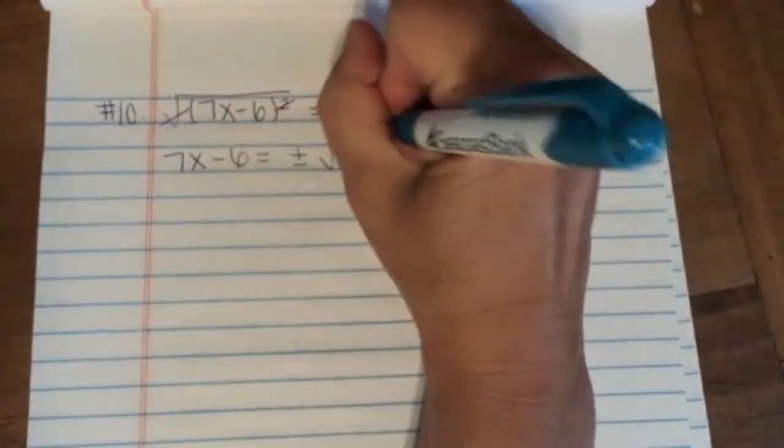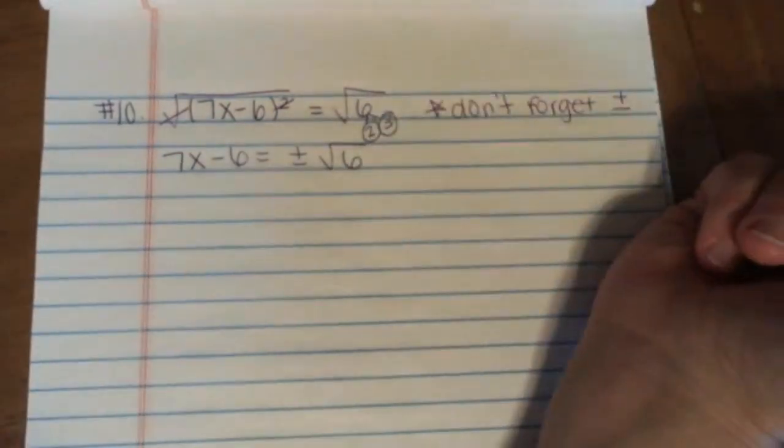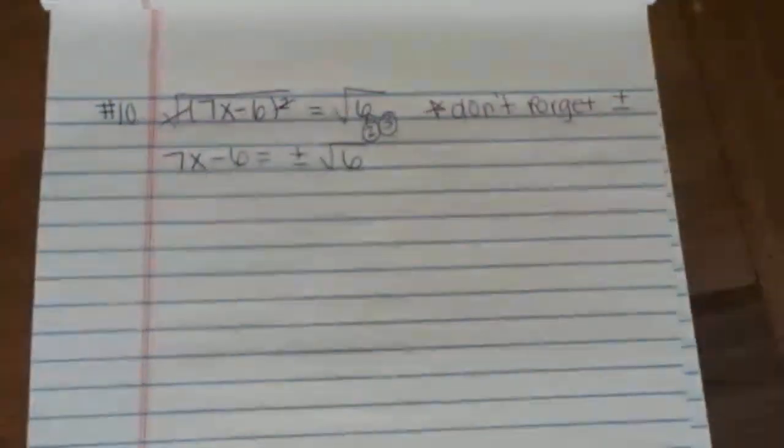If I were to break down 6, it would just be 2 times 3, so there's no two of a kind, so nothing I can do to simplify that radical, so we can just leave it as the square root of 6.